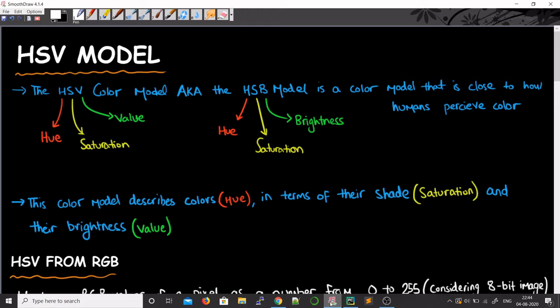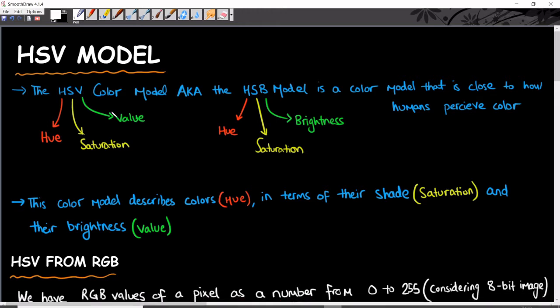Today I'll be discussing the HSV model. The HSV color model, also known as the HSB model, is a color model that is close to how humans perceive color. In the RGB model, you've got three layers of red, green, and blue film stacked on top of each other to form your image.